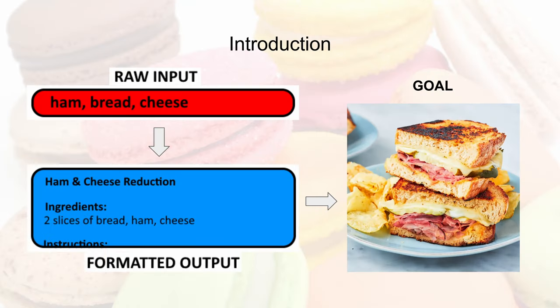So for years, possibly even decades, humans have been eating food. And usually when they eat, they want to eat good food. There's a whole industry of food scientists and professional chefs trying to figure out what kind of food is good and how to prepare that food. But we were wondering if we could replace all of that with a single model. That's sort of the basis for our project.